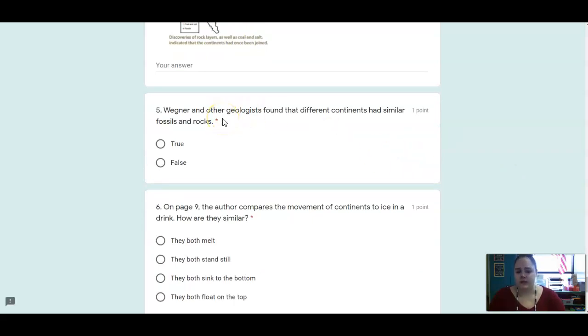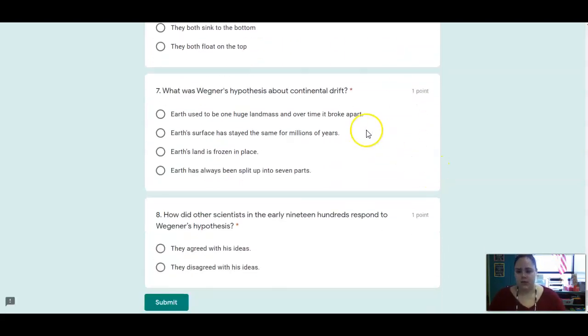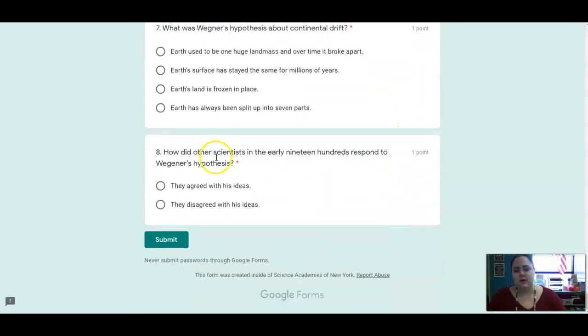Number six asks you to go back to page nine. The author compares the movement of continents to ice in a drink. How is the ice similar to the continents? Number seven, what was Wegener's hypothesis about continental drift? And number eight, what did the other scientists think about Wegener's hypothesis?